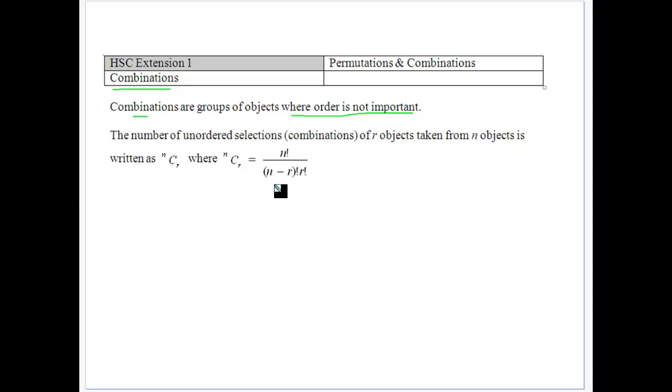Very similar to the permutation notation, which is n factorial over n minus r factorial. But really we're dividing as well by r factorial, which is basically the situation because order is not important.